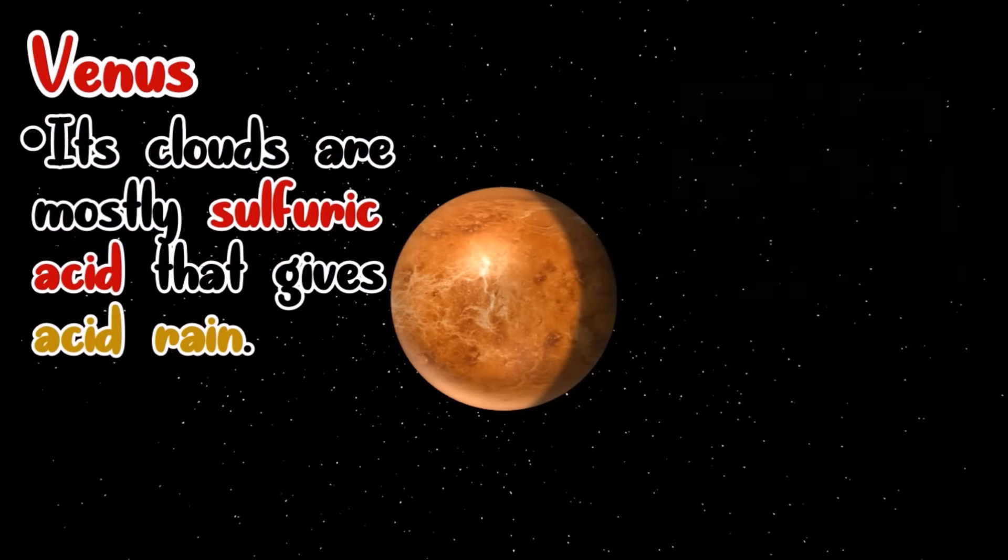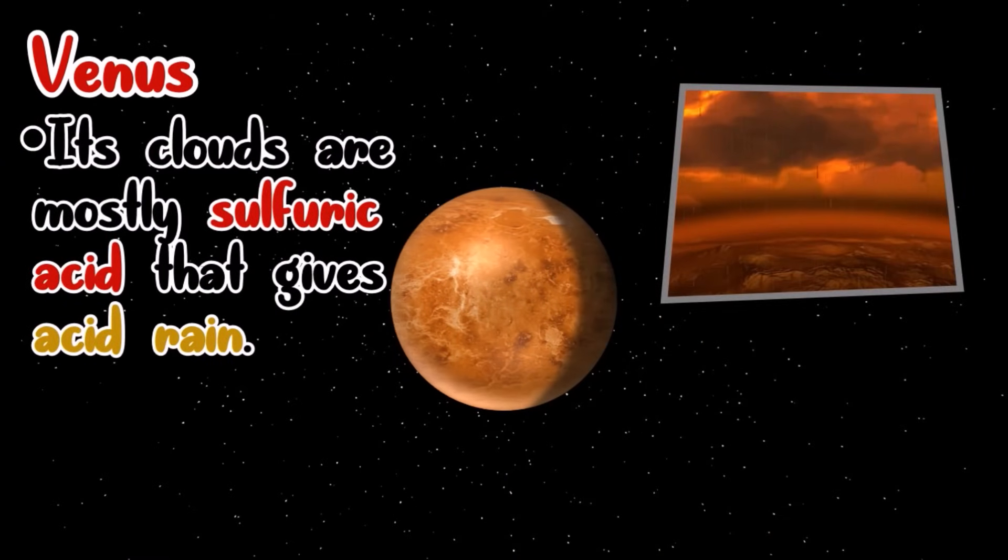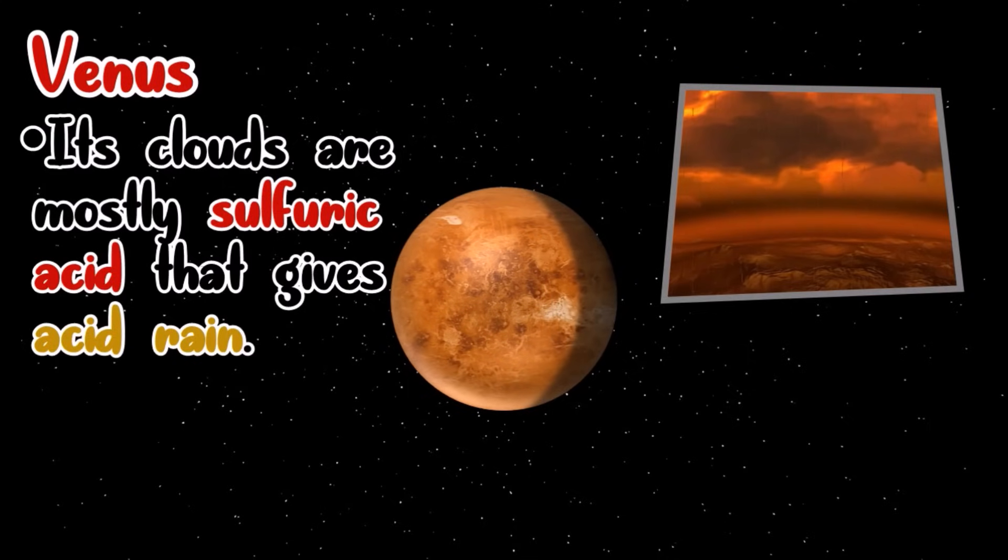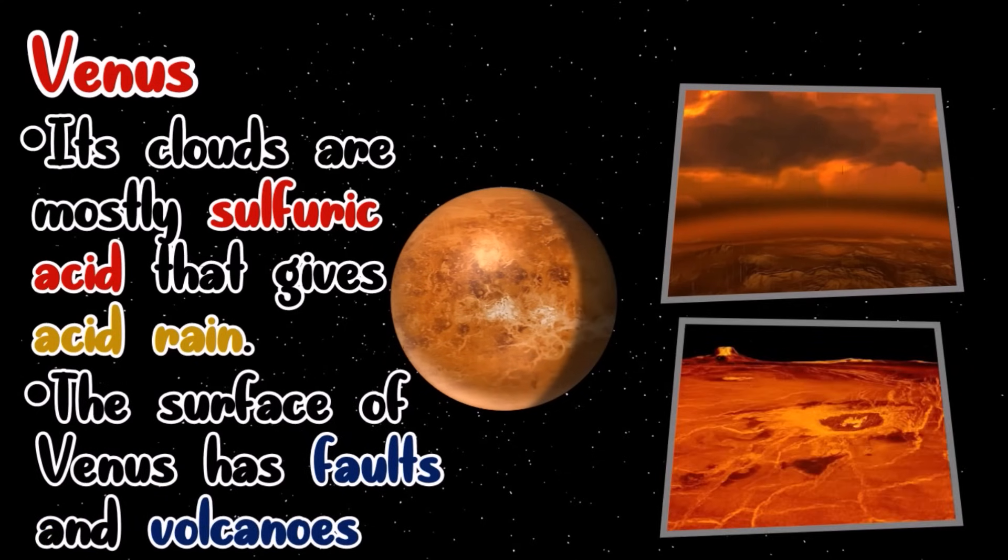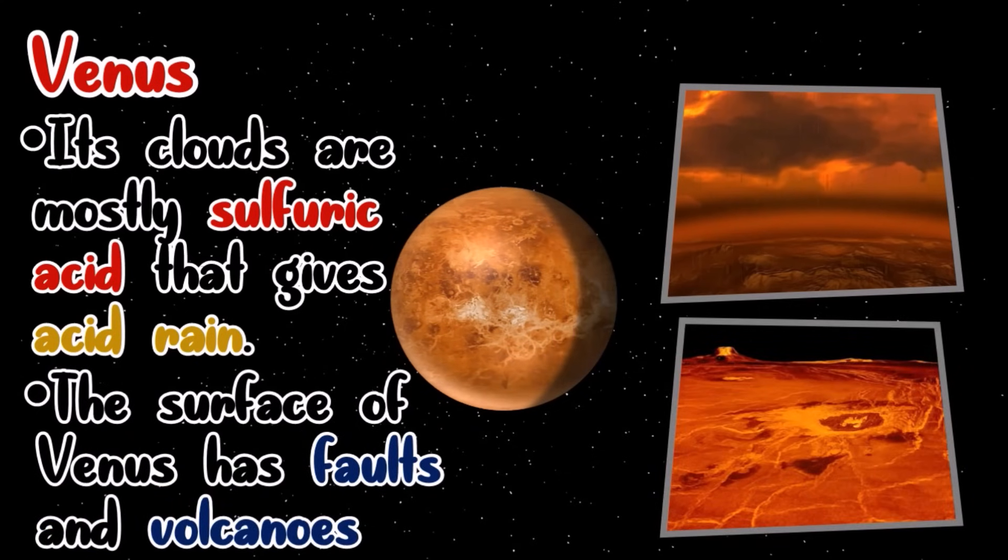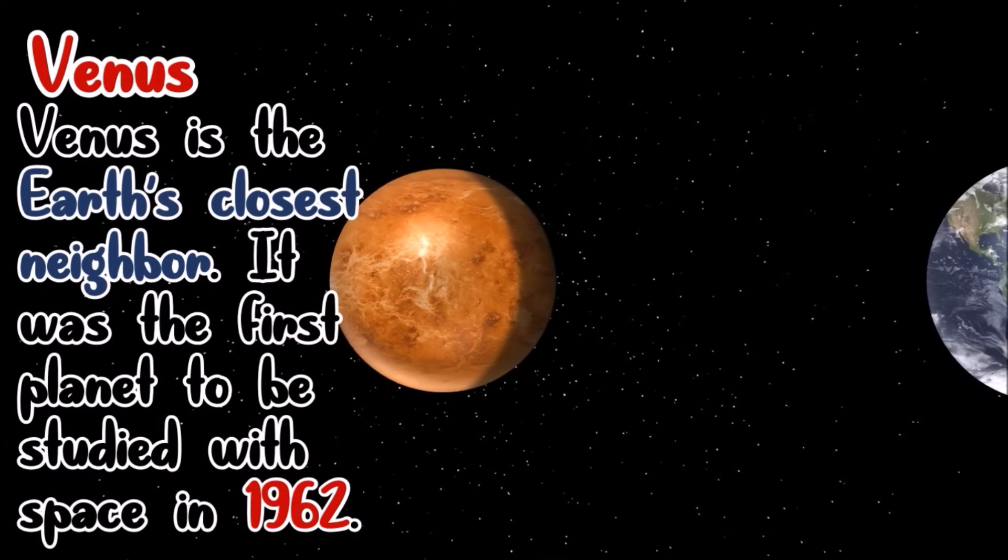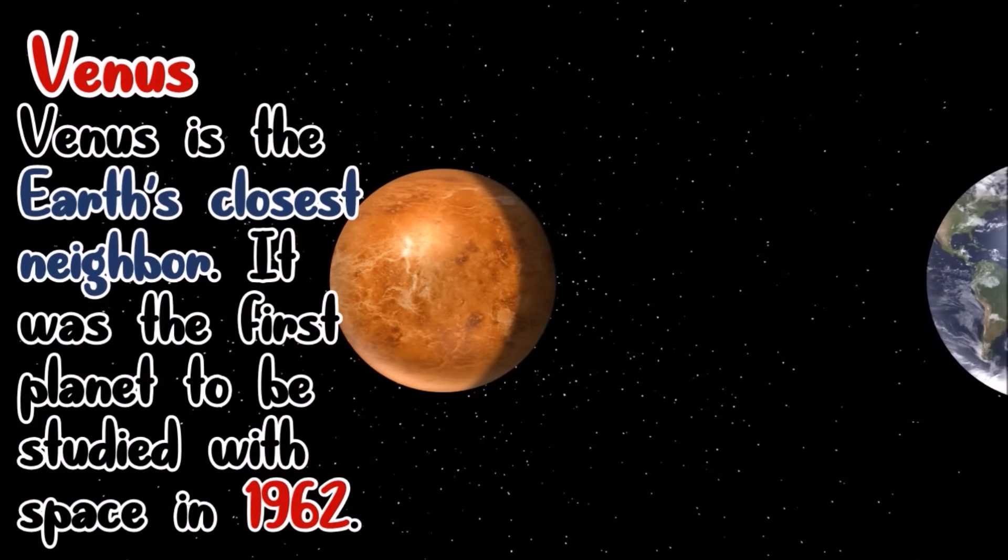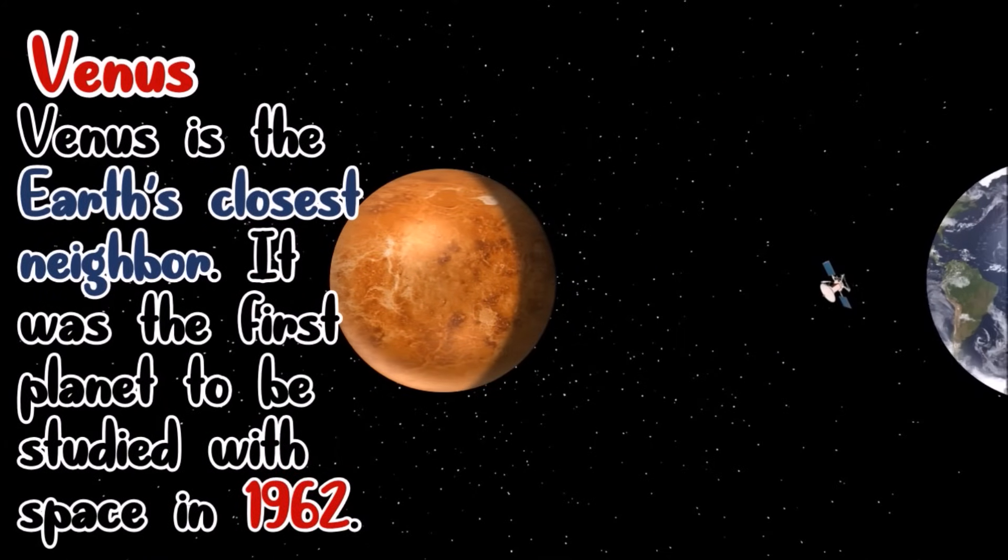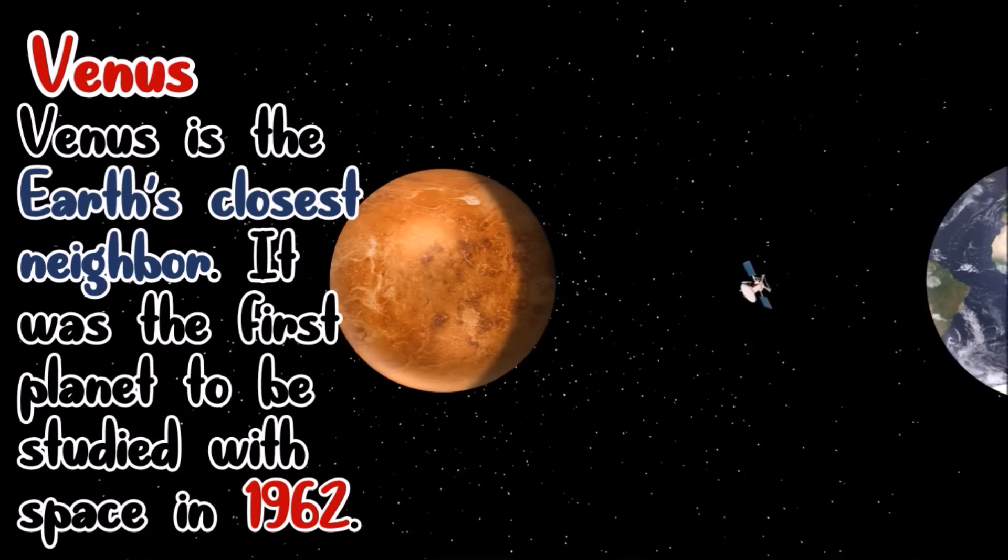And because of that, the clouds of Venus are mostly sulfuric acid, which gives Venus a yellow-white color. All the rains in Venus are acid rain. The surface of Venus has faults and volcanoes. Venus is the Earth's closest neighbor. It was the first planet to be studied with space probes in 1962.